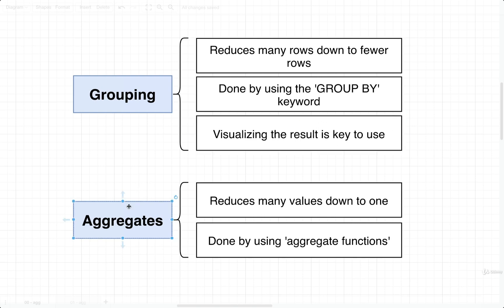The other thing we're going to talk about is aggregates. The goal of an aggregate is to take many different values and reduce them down to one value. When I use the term values here, I'm really talking about distinct values inside of a column of data.